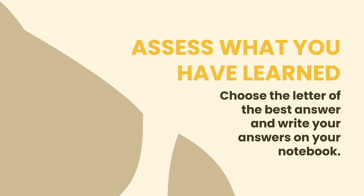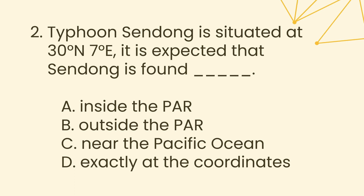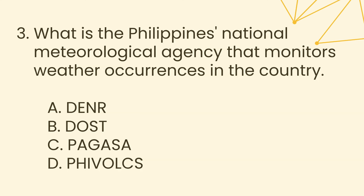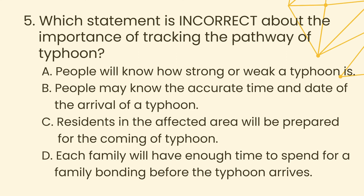Assess what you have learned. Choose the letter of the best answer and write your answers on your notebook. You can pause the video if you need more time in answering. Let us start. Questions 1 through 5 revisit the earlier quiz topics: data needed in tracking a typhoon, the location of Typhoon Sendong, the Philippines' National Meteorological Agency, the part of the typhoon with calm conditions, and the incorrect statement about the importance of tracking a typhoon's pathway.